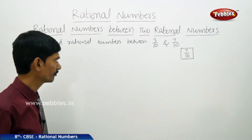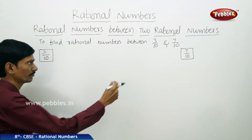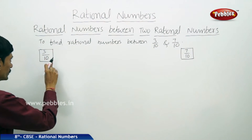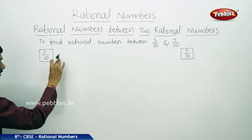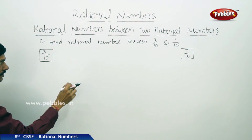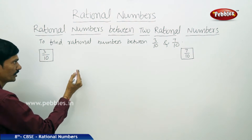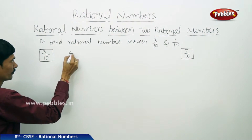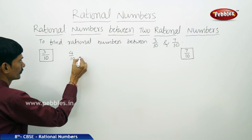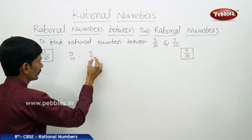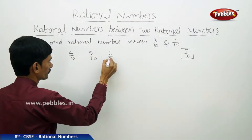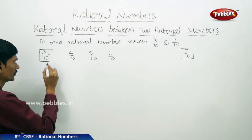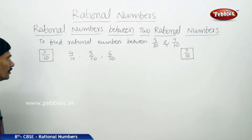Between 3 by 10 and 7 by 10, when denominators are equal, we can find 4 by 10, 5 by 10, and 6 by 10 — these 3 rational numbers. But if we multiply both numerator and denominator of the rational numbers by 2, we get 6 by 20 and 14 by 20. Between these we can find 7 by 20, 8 by 20, 9 by 20, 10 by 20, 11 by 20, 12 by 20, and 13 by 20.